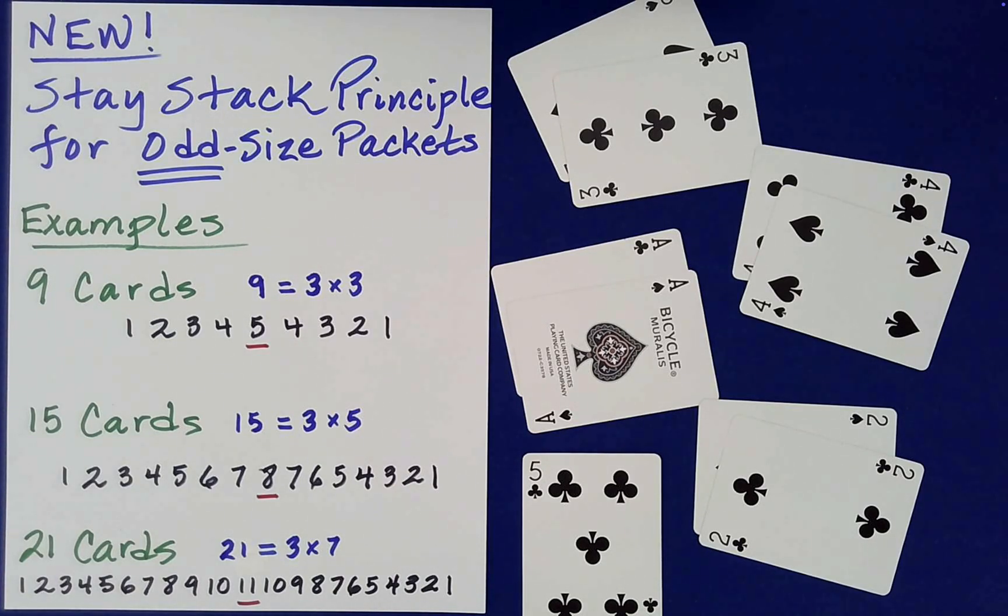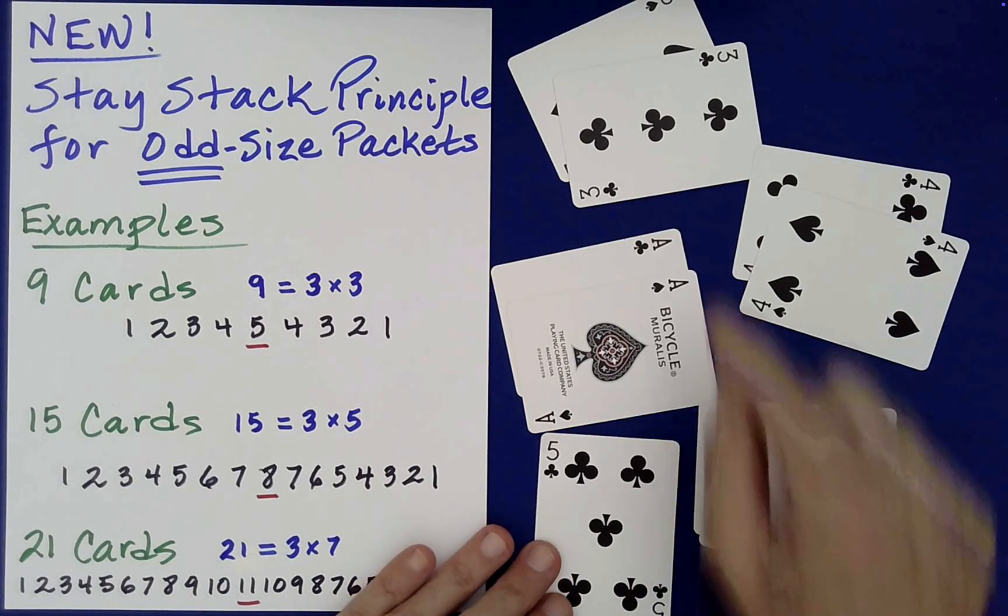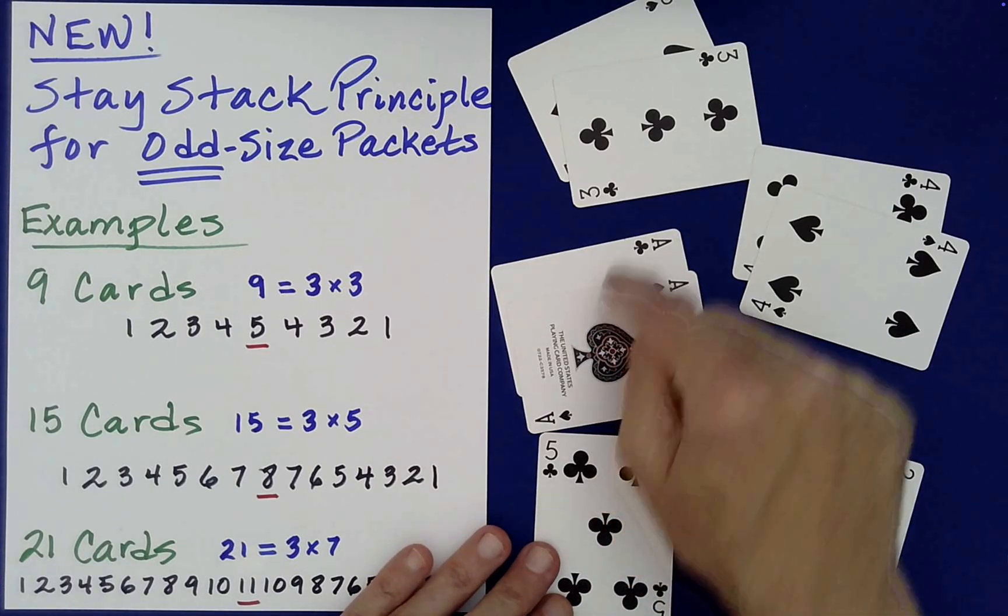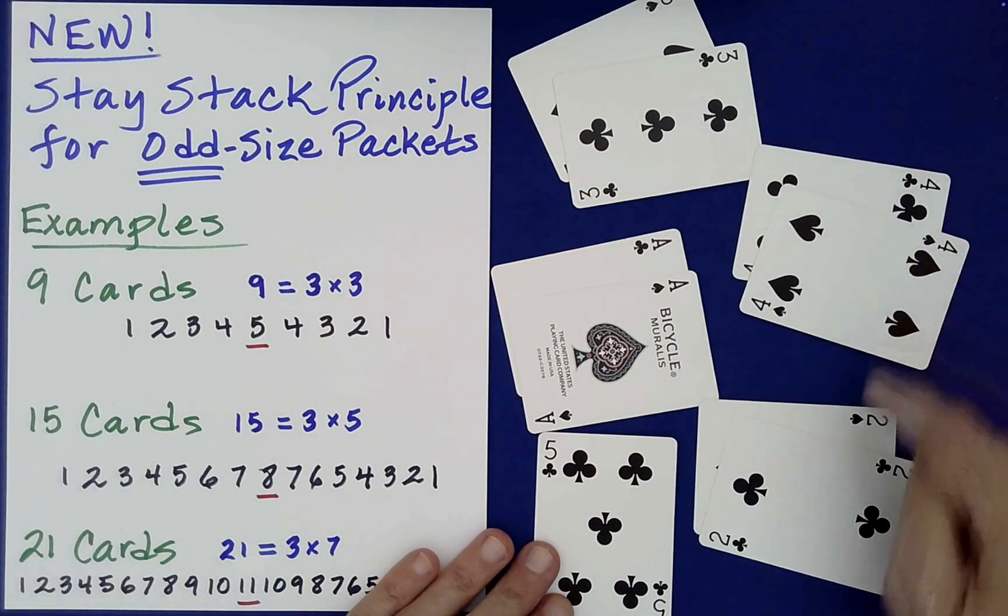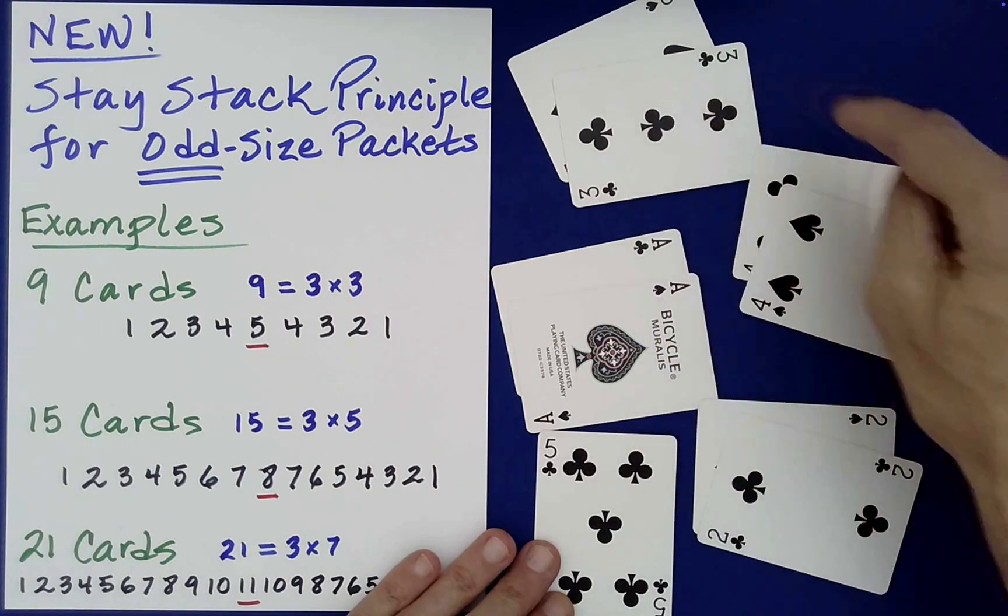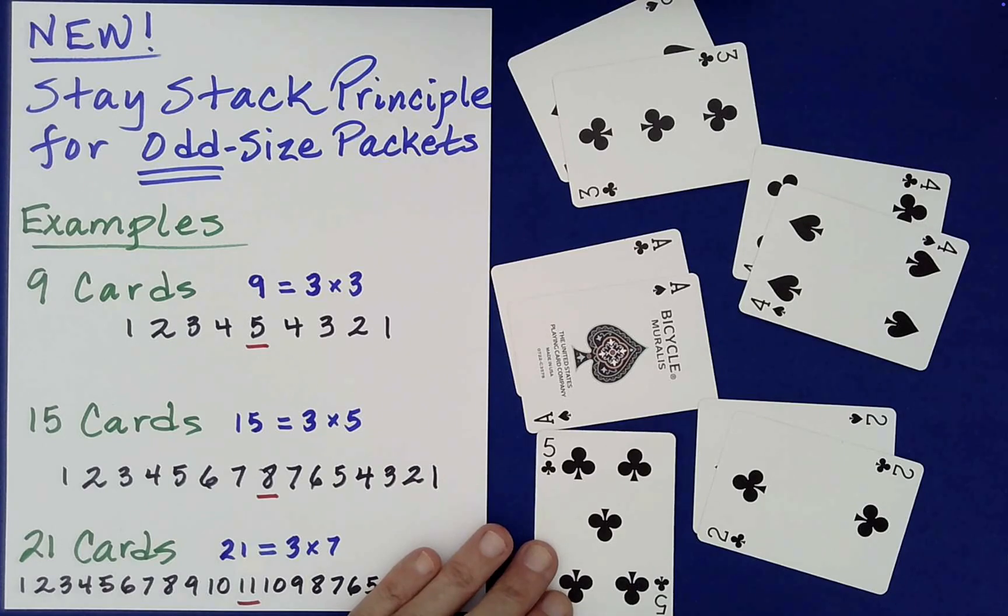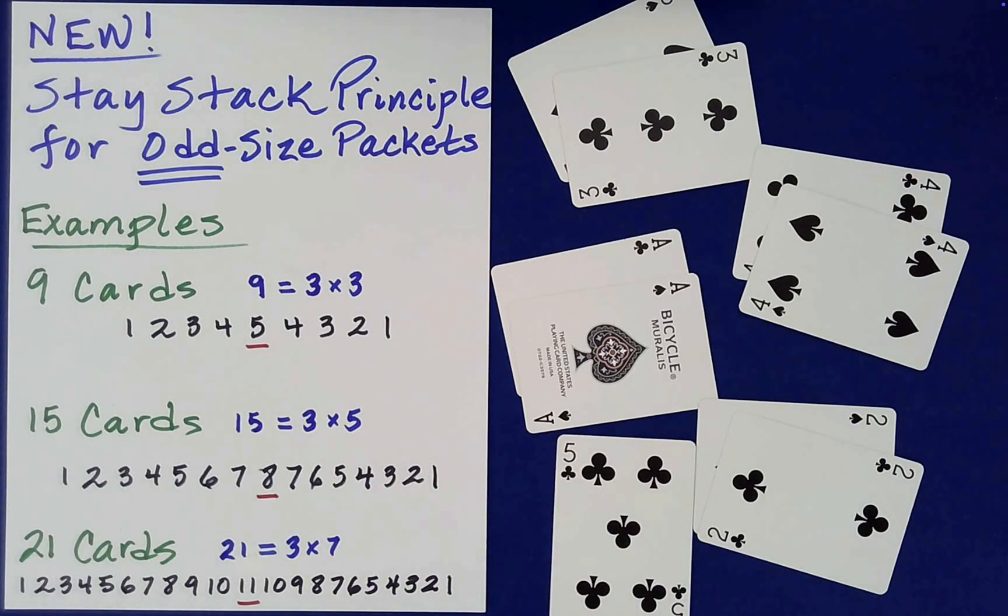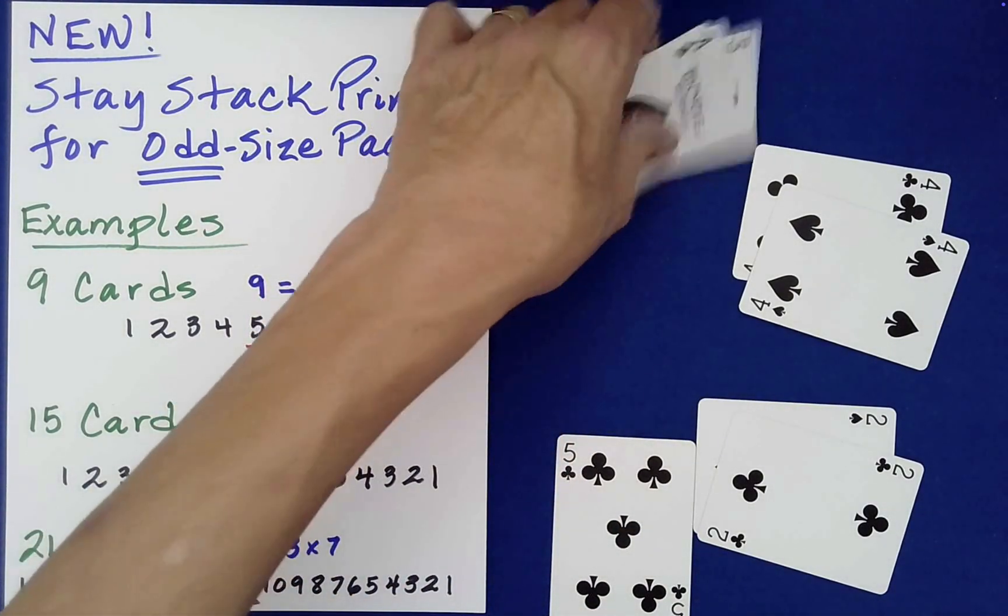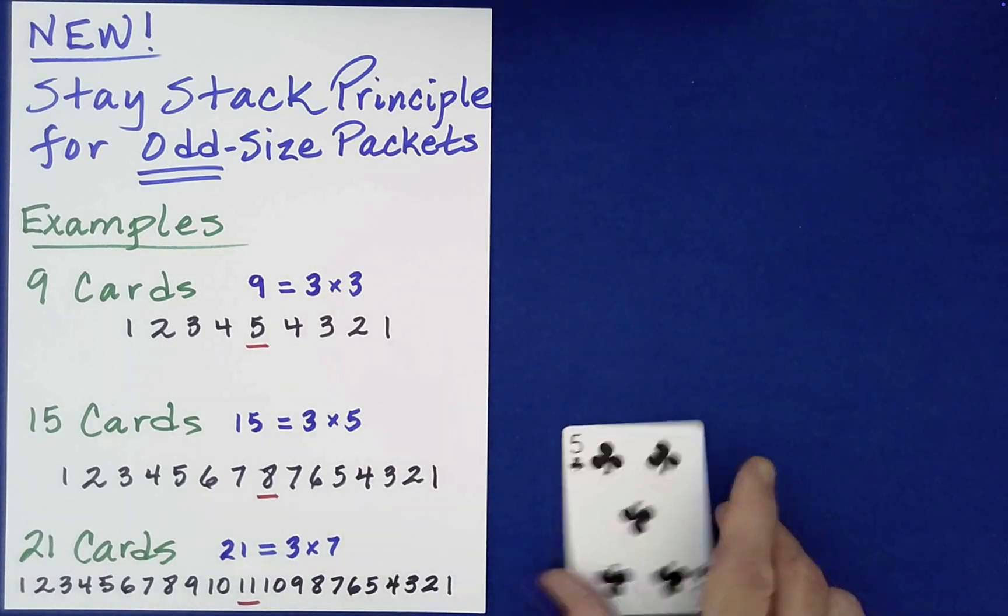Now here we'll have a five in the middle, right, by itself. Now in the performance, I took advantage of that because I had, instead of having these pairs match in value, I had pairs that add to 13. And we had more cards, right? We had 15 total. And then I had a king in the middle. So that's kind of an illustration of this new stay stack principle.